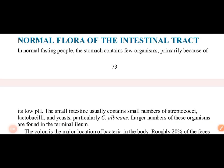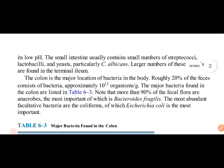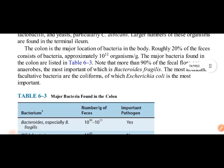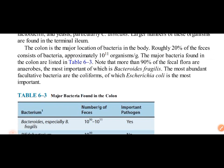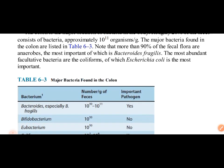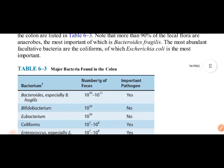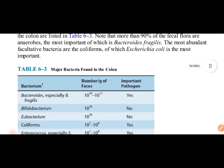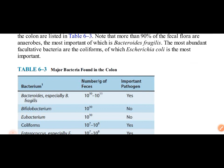We have normal flora of the intestinal tract — Candida albicans, Lactobacillus, etc. The colon is a major location of bacteria in the body, with trillions per gram present. About 20% of feces are bacteria. 90% of fecal flora are anaerobes, such as Bacteroides fragilis. The remainder are facultative anaerobes like coliforms and Escherichia coli.